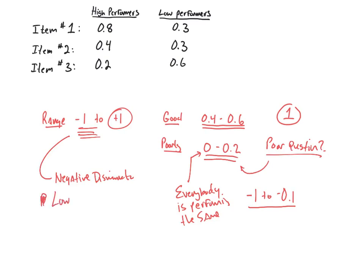What happens with a question that is negatively discriminating is that it actually tells us that the low performers are doing better on that particular question than the high performers. So our low-performing students are getting that question right, whereas the high-performing students are getting that question wrong. That's what we call negative discrimination.